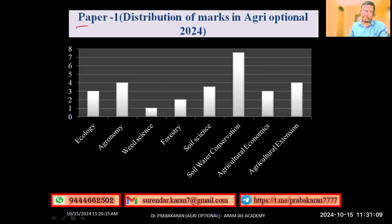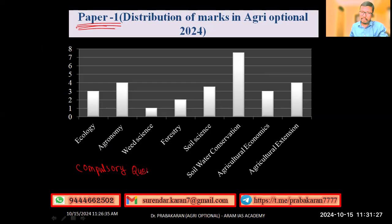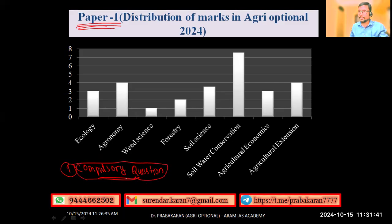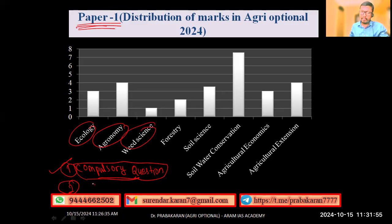First we will see Paper 1. Before moving into the video, just keep two things in mind. In Civil Services there will be a compulsory question. This compulsory question can be answered only if you entirely cover the syllabus — you cannot skip any part. The second point is there will be a combination of questions; for example, one question might be from ecology and another from agronomy or weed science.